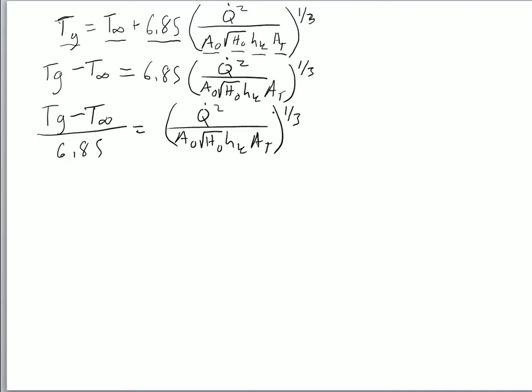Then, so now we have a power. So we're going to flip it. We're going to take the numerator and put it in the denominator and the denominator into the numerator. So we're going to have T_g minus T infinity over 6.85 raised to the 3 over 1 power equals Q dot squared divided by A naught square root H naught h sub K area total.